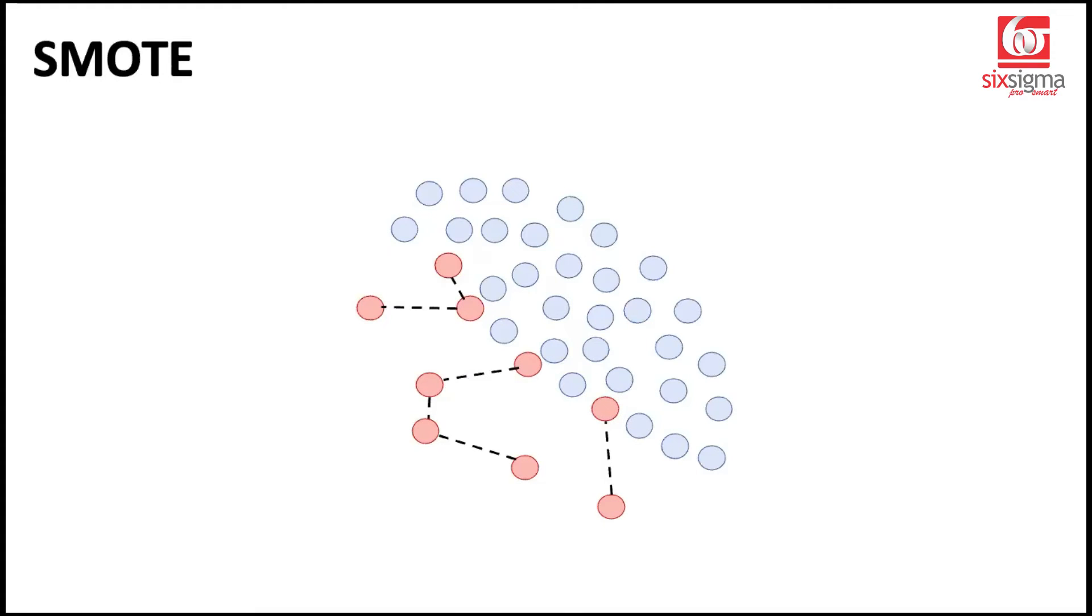And then it does linear interpolation to place the synthetic records in between, which will be something like this. Because these two points were neighbors, it has placed a record in between. Because these two points were neighbors, it has placed a record in between. Likewise, everywhere else. Now, these points that you have generated would become a part of the class red. Right now, we represented them using a darker shade just to indicate that these are synthetic records. But eventually, these will be treated just like the other records in the minority class. So they would eventually become something like this.